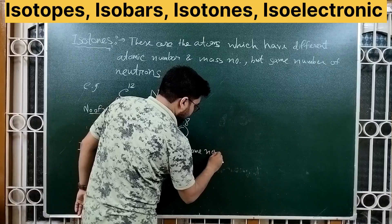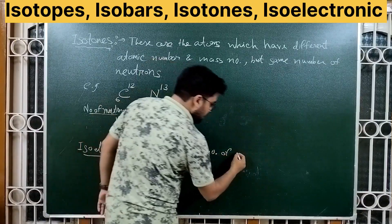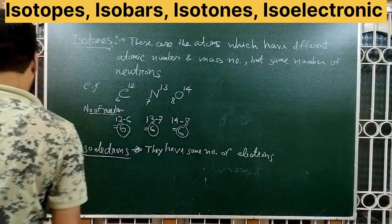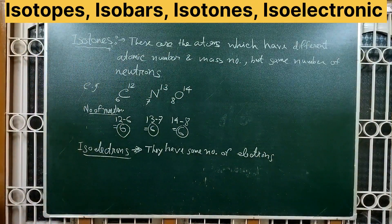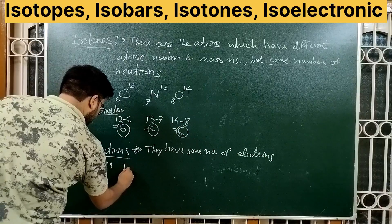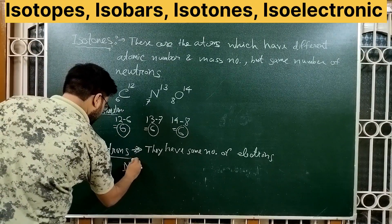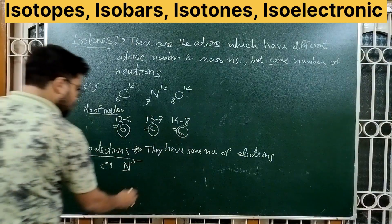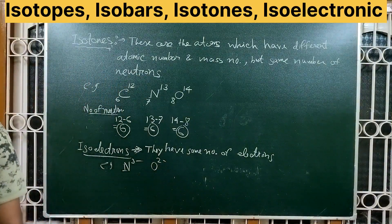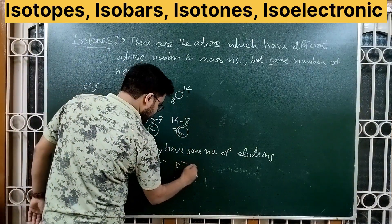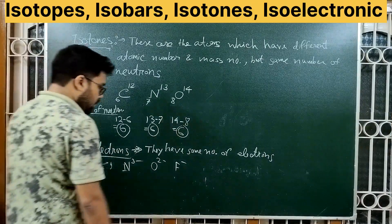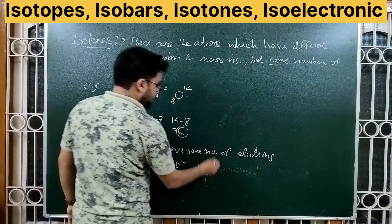Next, isoelectronic species. These are species which have the same number of electrons. For example: N³⁻, O²⁻, F⁻, and neon (a neutral noble gas) are all isoelectronic with each other.